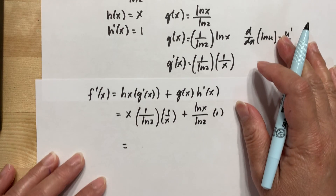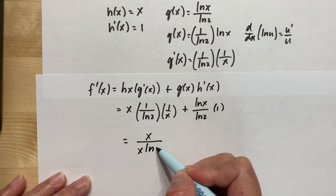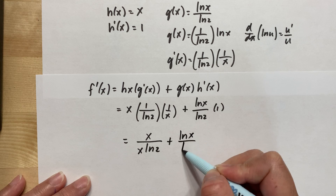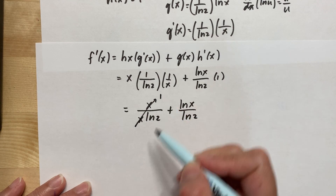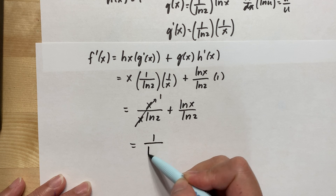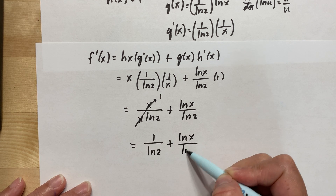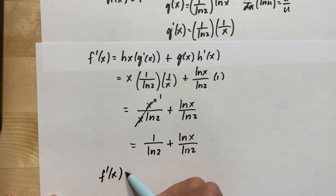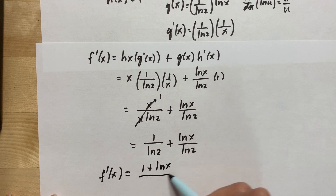Simplifying, we get x/(x·ln 2) + ln(x)/ln(2), which gives us 1/ln(2) + ln(x)/ln(2). So our derivative f′(x) is equal to 1 plus ln(x) over ln(2), or equivalently (ln(2) + ln(x)) / ln(2).